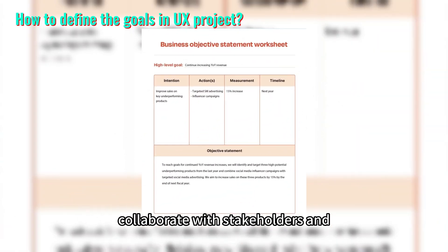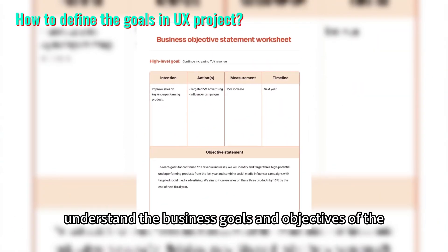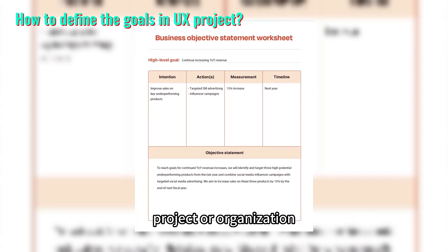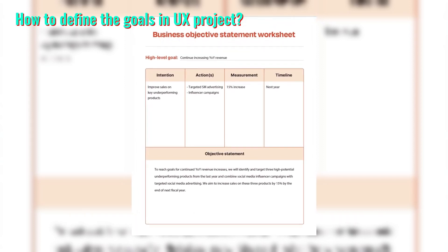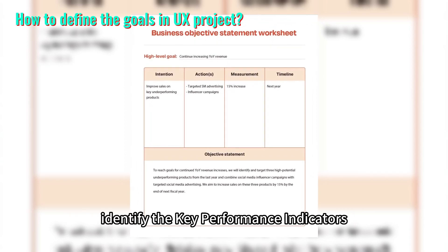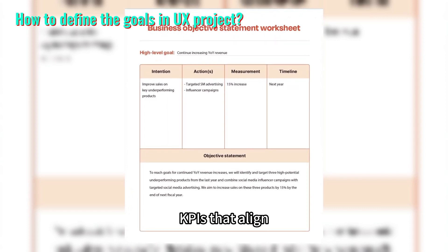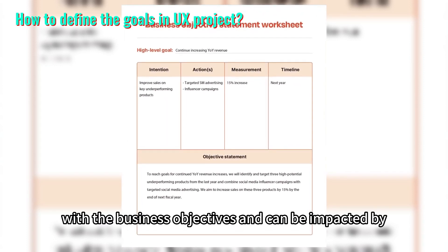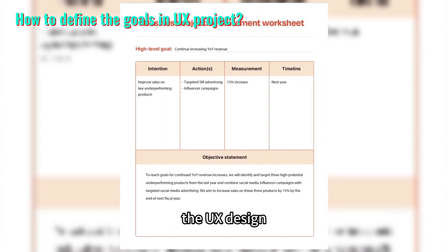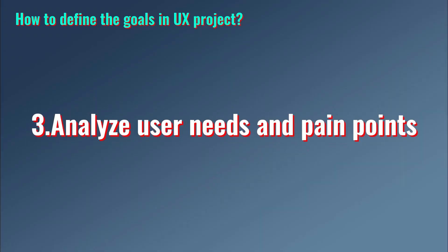Step two: understand business objectives. Collaborate with stakeholders and understand the business goals and objectives of the project or organization. Identify the key performance indicators (KPIs) that align with the business objectives and can be impacted by the UX design.